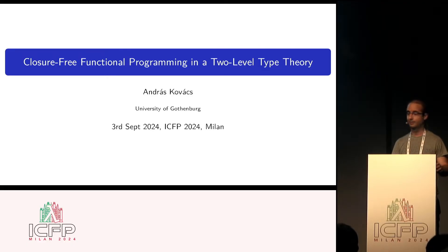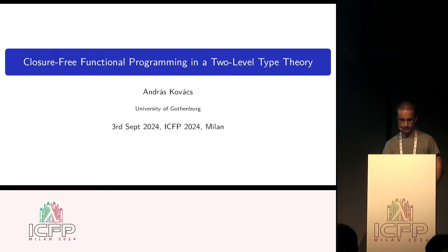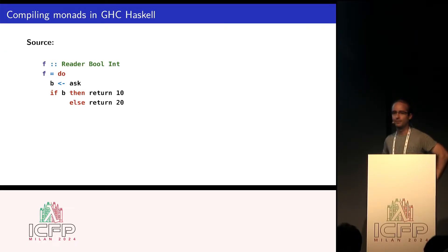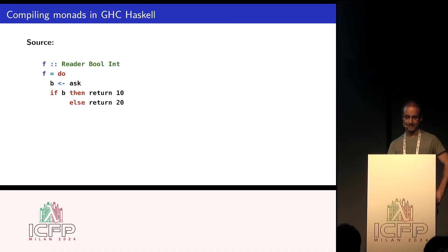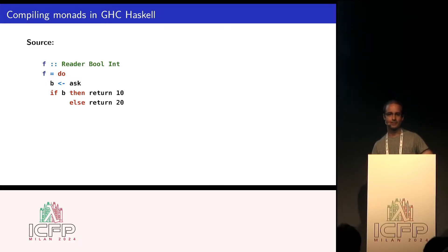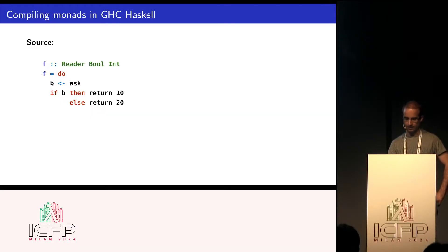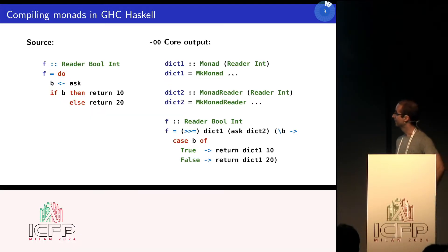This talk is about closure-free functional programming in a two-level type theory. Let's look at what happens when we use monads in Haskell. If you have a source code which looks like this - just an ordinary, simple definition in the reader - reader is one of the simpler monads that people usually use in Haskell. What happens if we compile it without any optimizations?